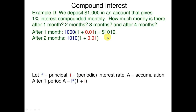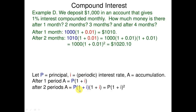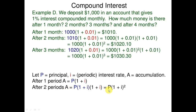After two months: 1010 into (1 + 0.01) equals 1000 into (1 + 0.01) into (1 + 0.01), that equals 1020.10 dollars. After two periods: P into (1 + i) squared.